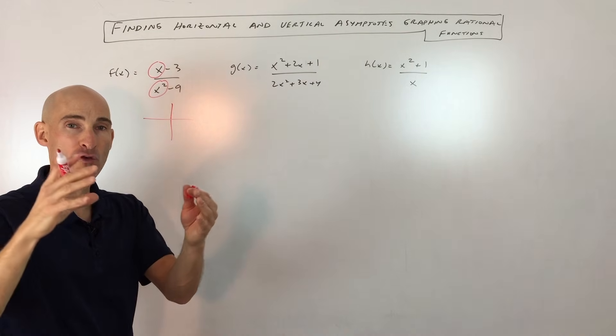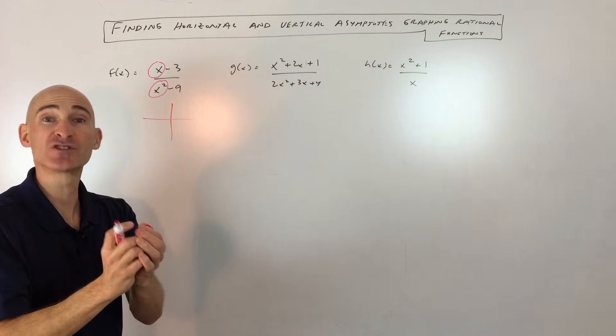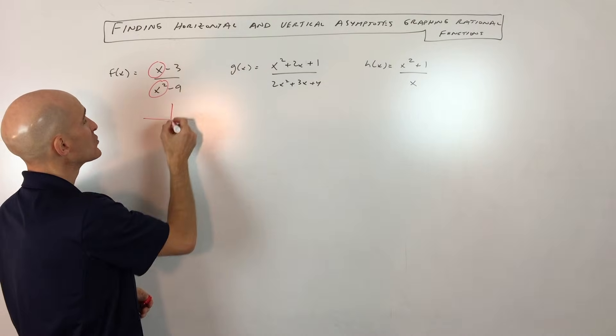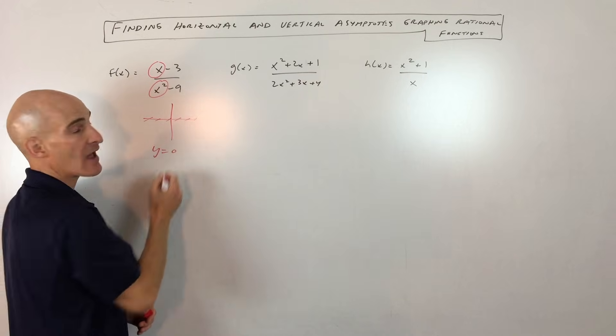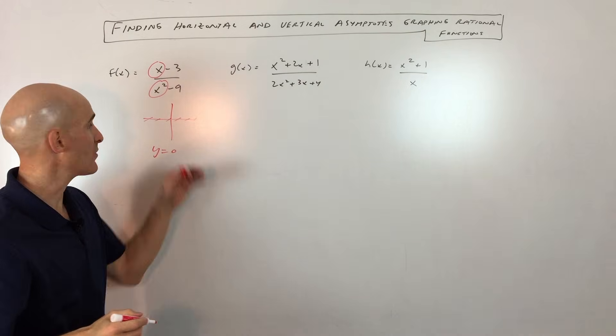What happens is the fraction overall gets smaller and smaller and approaches zero. So for these ones, you're going to get a horizontal asymptote of y equals zero. It's going to be right on the x-axis, approaching that line.